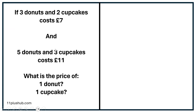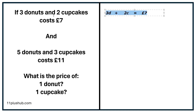The best way to work this out is we're going to rewrite our question using algebra — in other words, rewrite our question losing all the words and only include numbers and letters. The first part of the question says three doughnuts and two cupcakes cost seven pounds, which we can rewrite as 3d + 2c = 7. This means exactly the same thing. Then the next part: five doughnuts, so 5d, plus three cupcakes, 3c, equals 11.